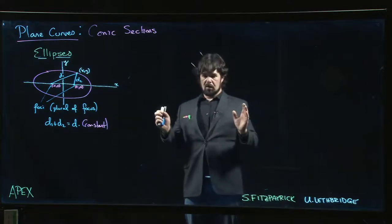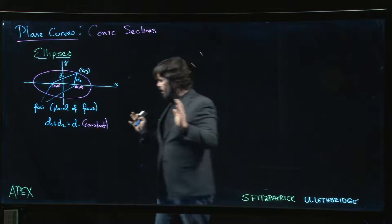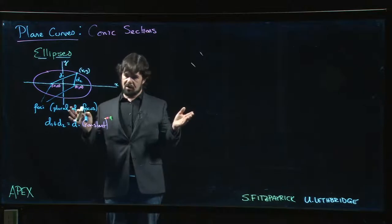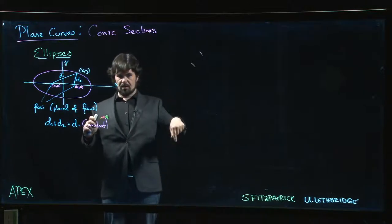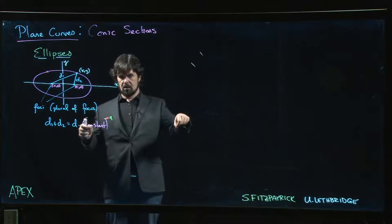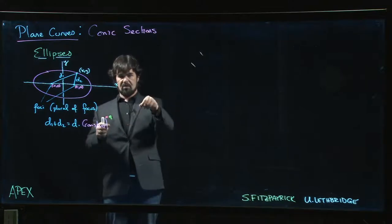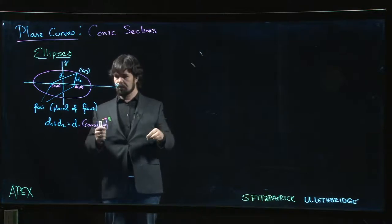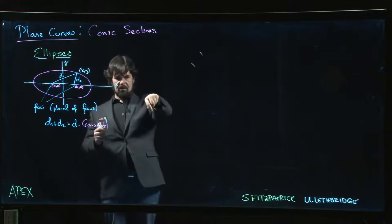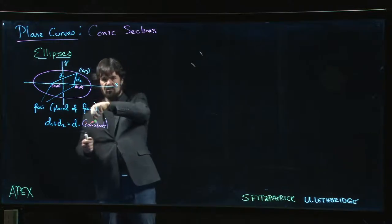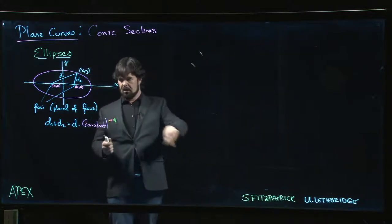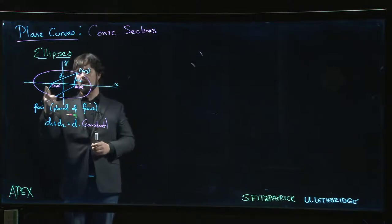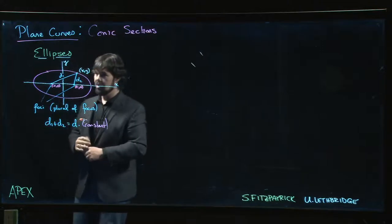You can actually create an ellipse if you have a table that you're allowed to pound some nails into. Knock a couple of nails into the table, tie a piece of string with enough slack so there's still some room to stretch it after you've tied either end of the string to the two nails. Then you put a pencil in, and you hold the pencil until that string is tight, and then you move the pencil around, and you will trace out an ellipse. You can do a better job than my kind of wonky ellipse that I put up here on the board.